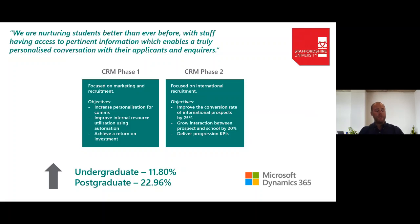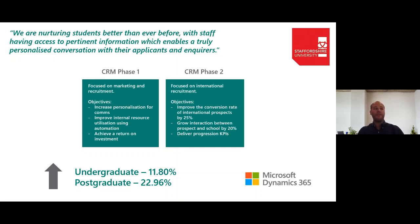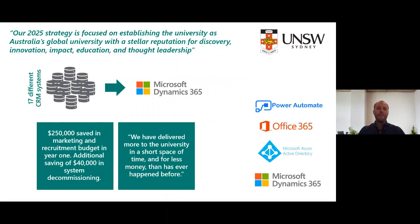The next example is Staffordshire University. Their wider CRM transformation programme is split into phases — phase one focuses on marketing and recruitment primarily around home students, and phase two is around international recruitment. That first phase is already complete, and in the year that system has been in place they've seen an uplift of undergraduate applications by 11.8% and postgraduate applications by nearly 23%, by rolling out Dynamics as an enterprise-wide solution. They have ambition to build on this beyond recruitment, right across the student lifecycle.